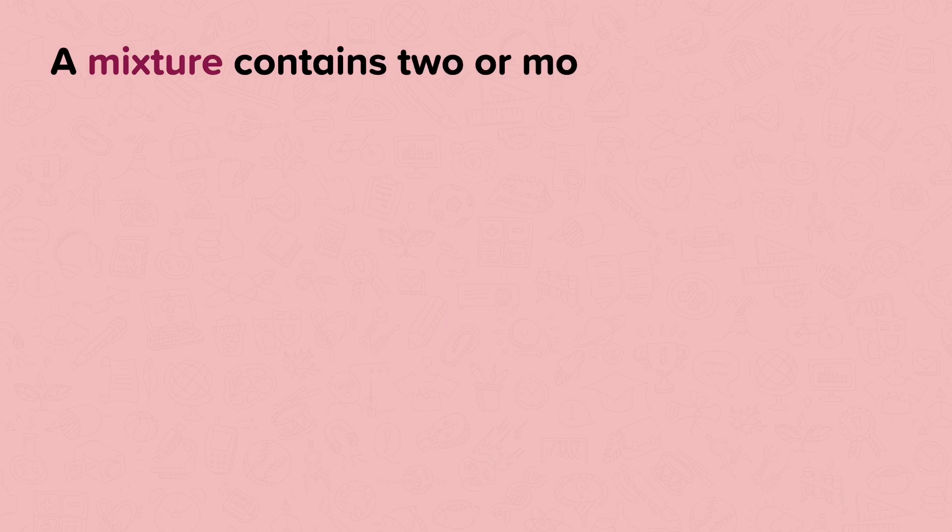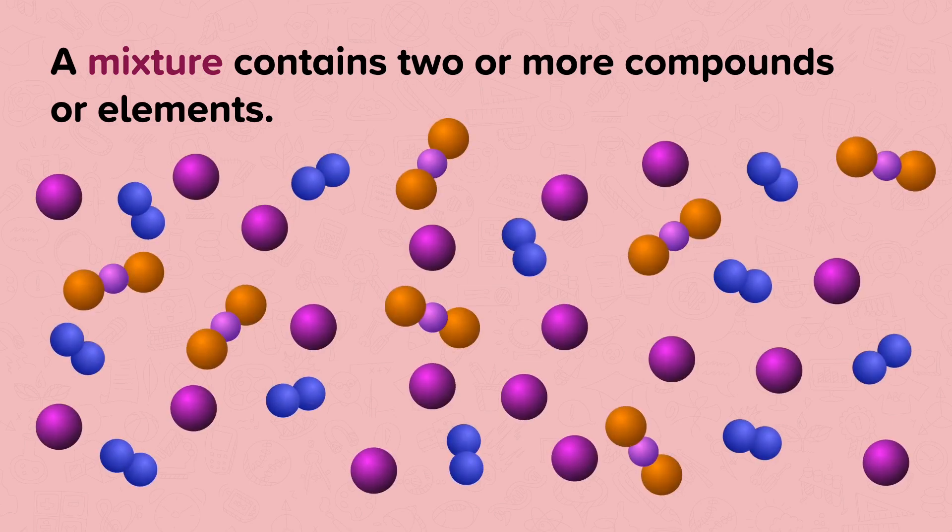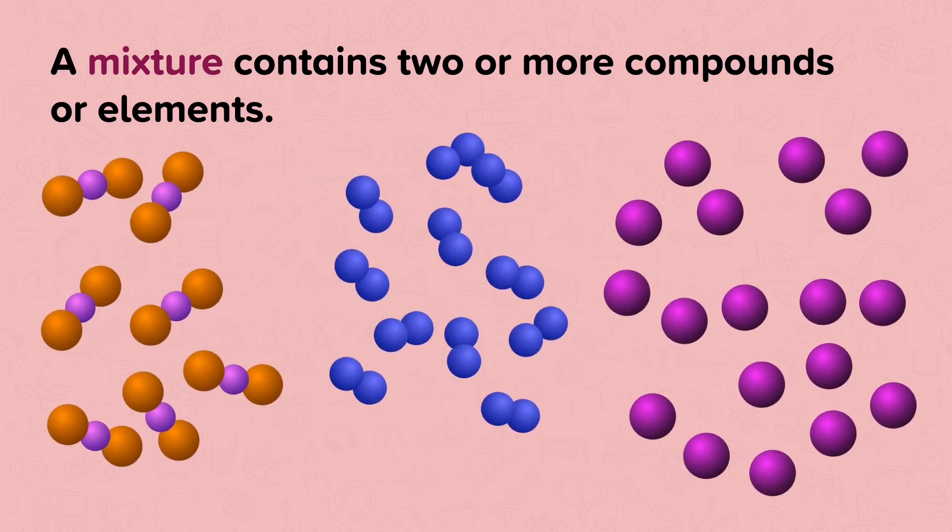A mixture contains two or more compounds or elements. The substances in a mixture are not chemically joined together. Another name for a mixture is an impure substance. As the components of a mixture are not chemically joined, they could be separated.